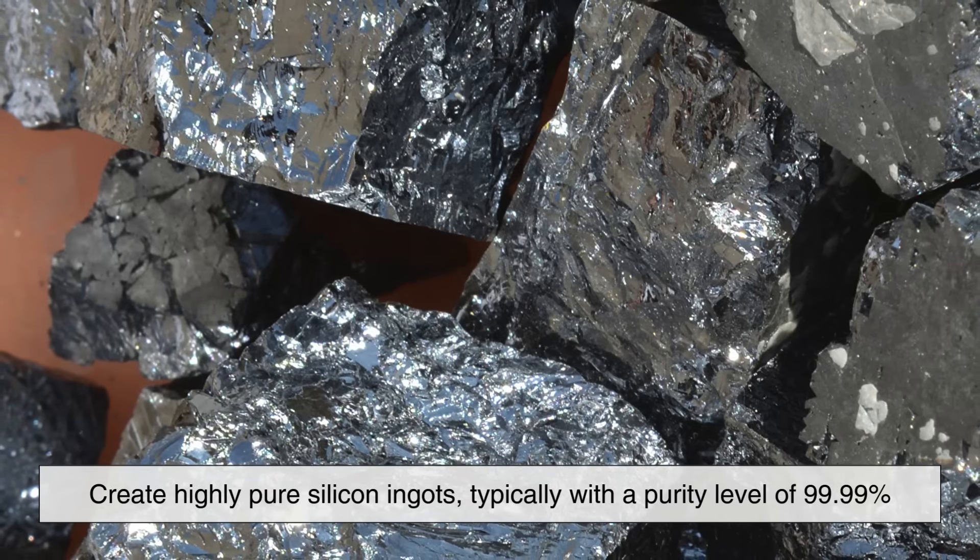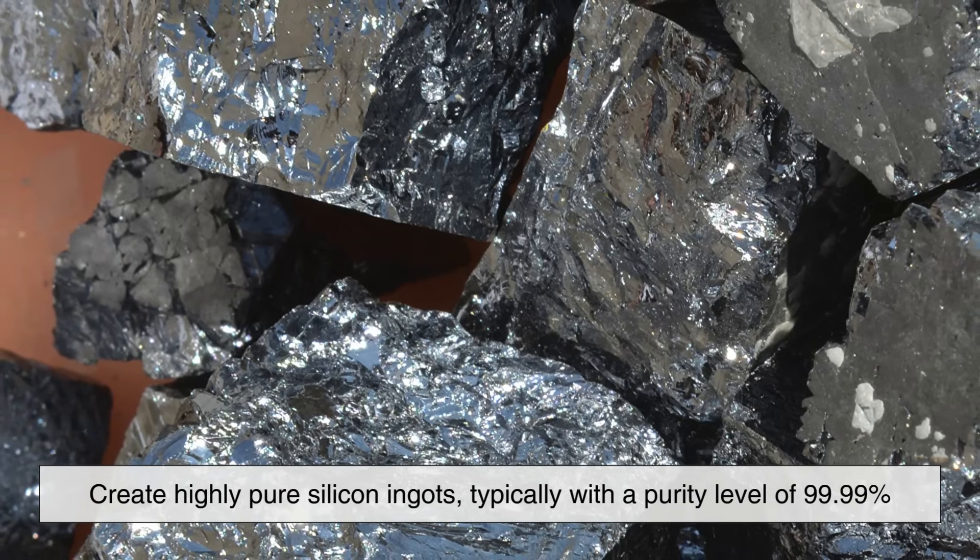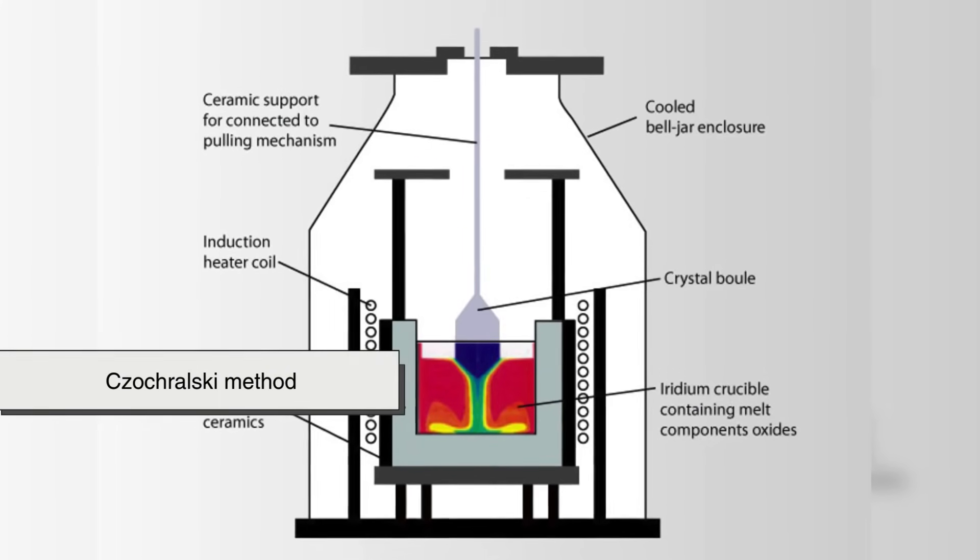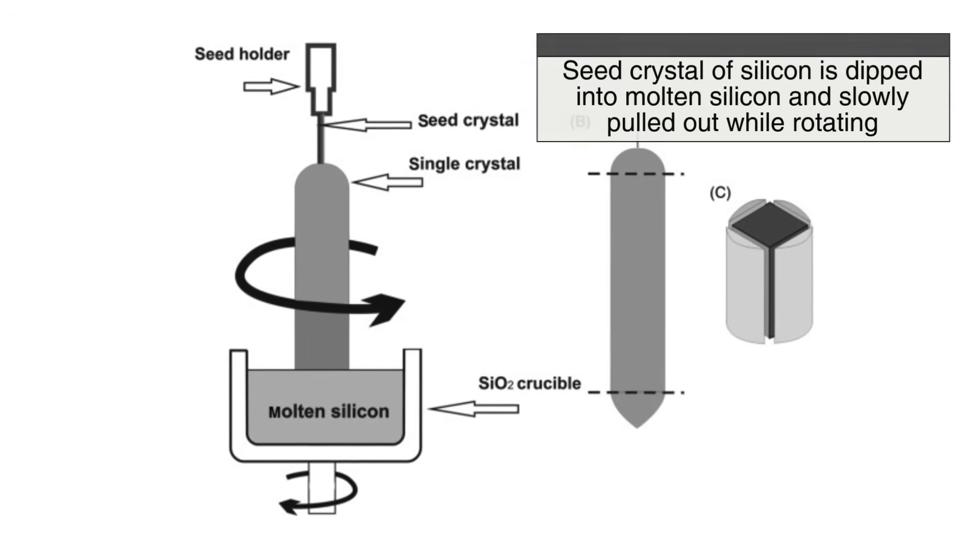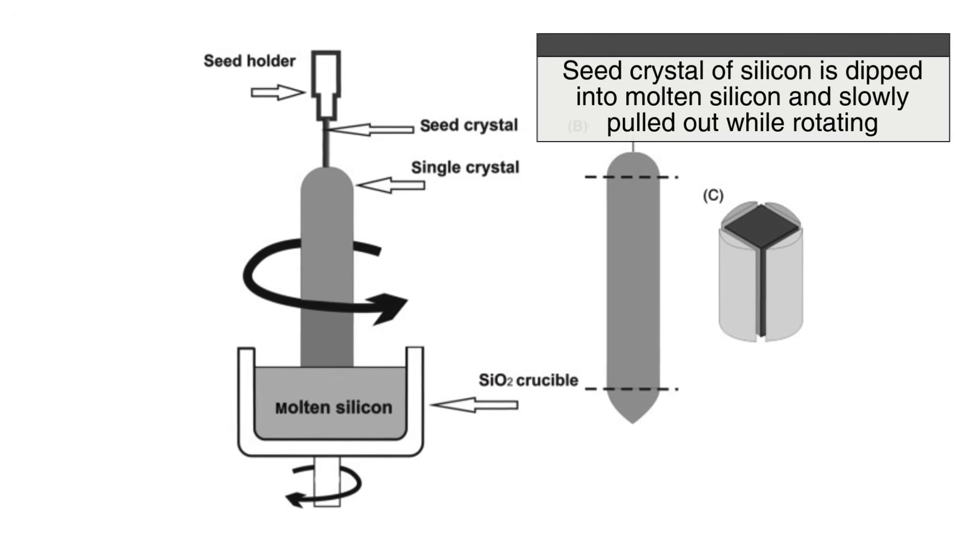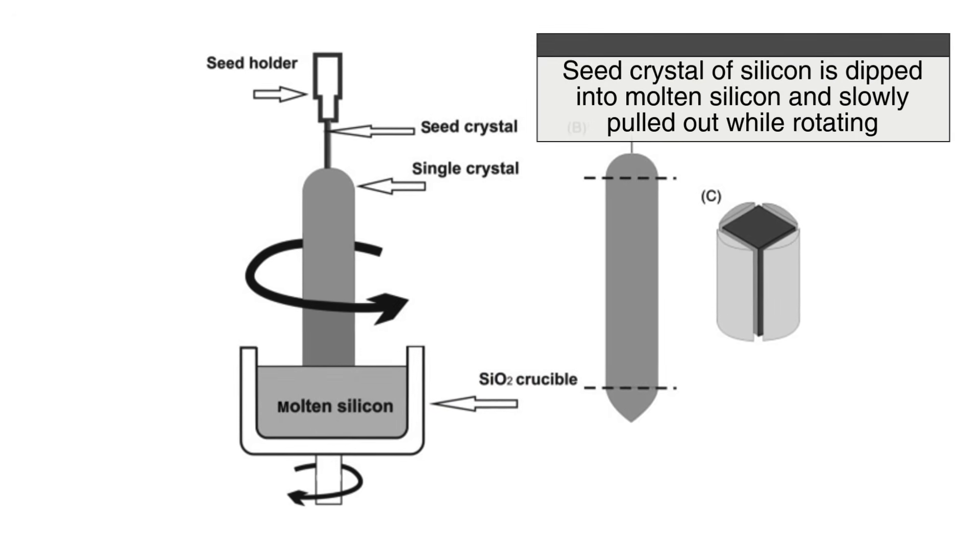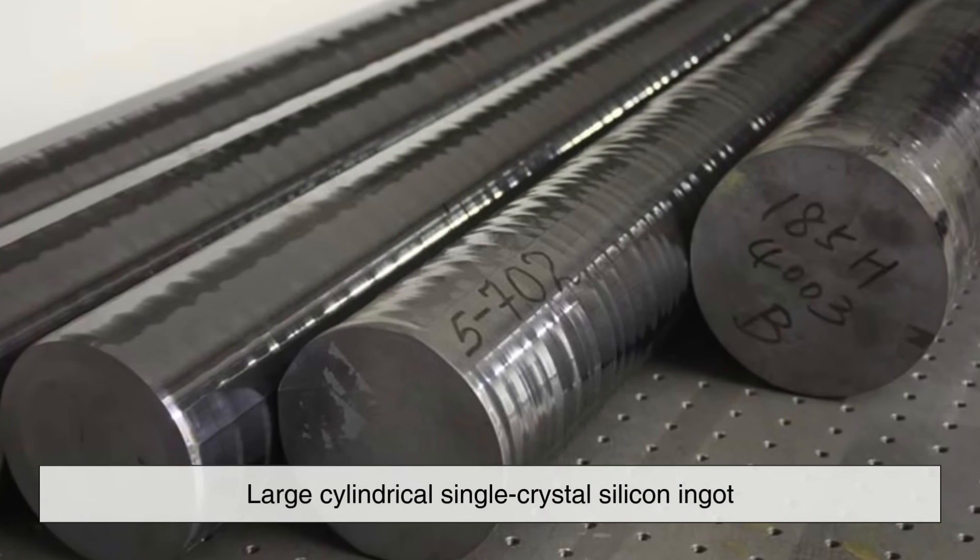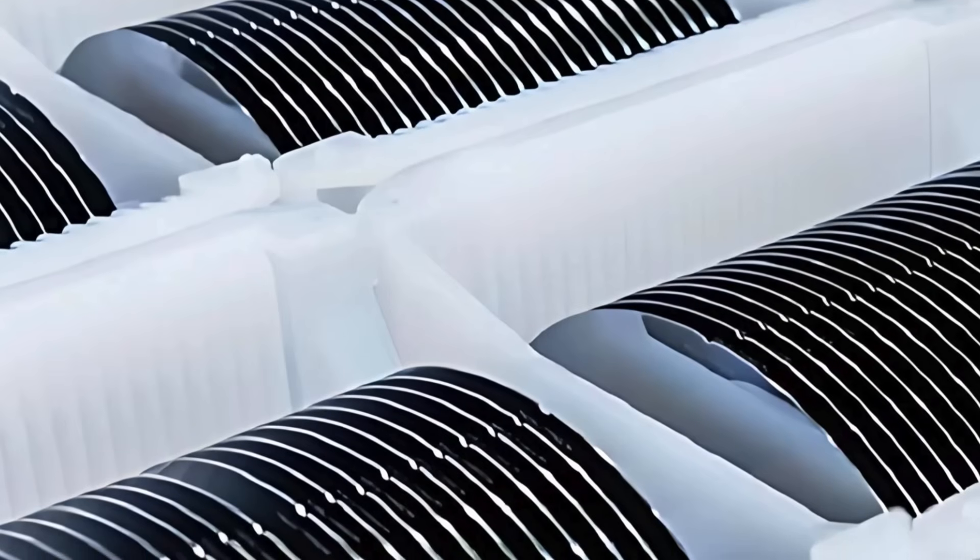This is done through a process called the Czochralski method, where a seed crystal of silicon is dipped into molten silicon and slowly pulled out while rotating, forming a large cylindrical single crystal silicon ingot.